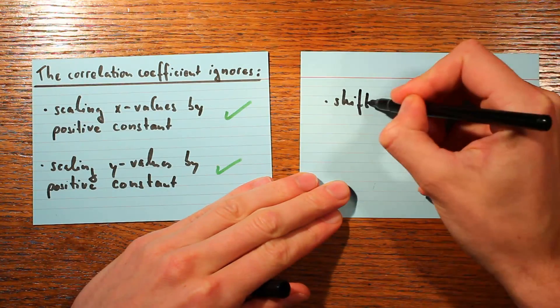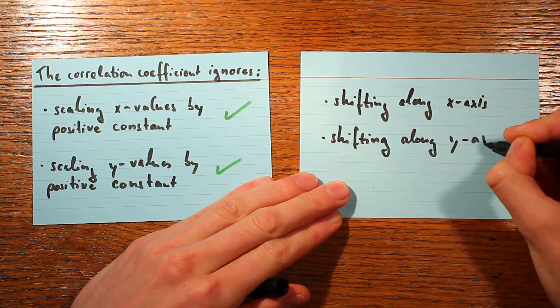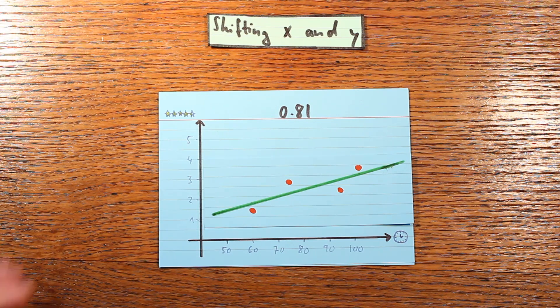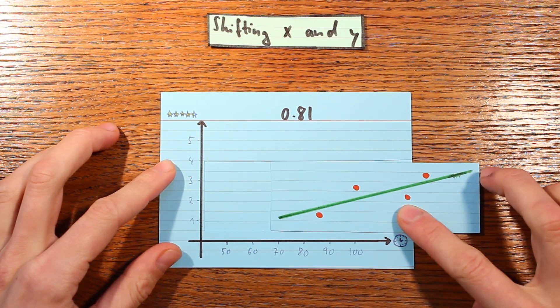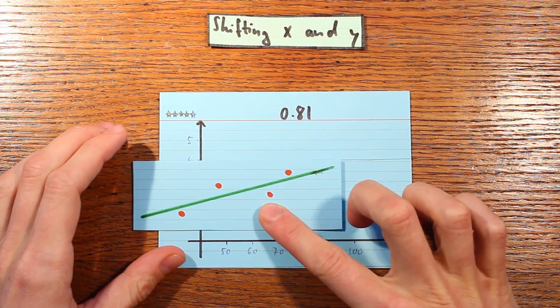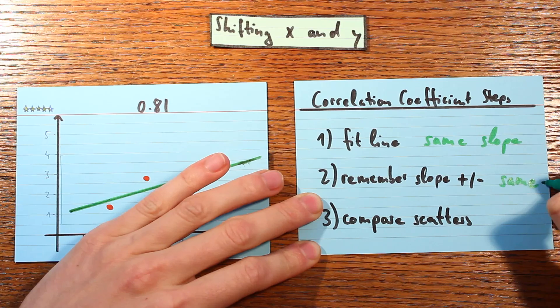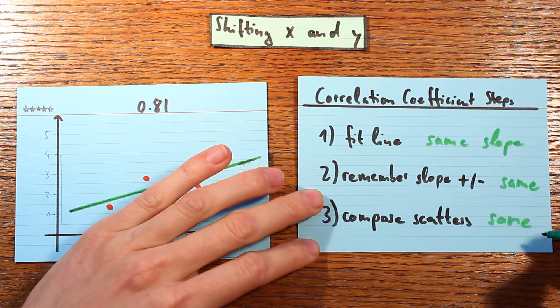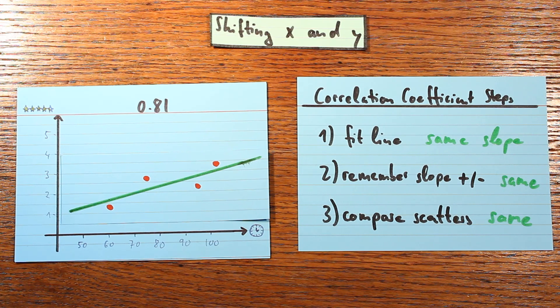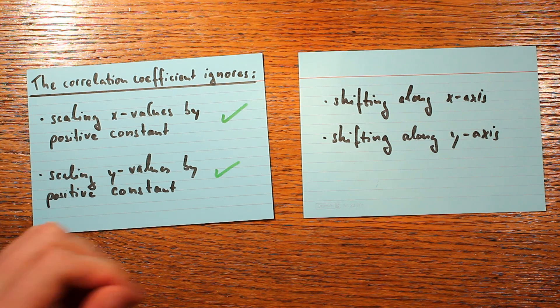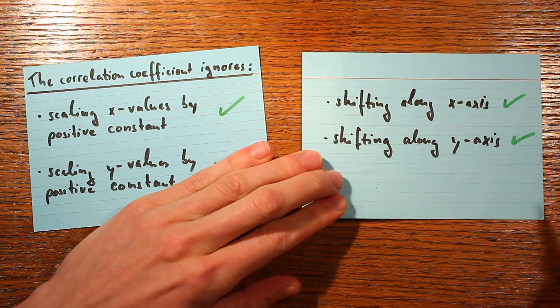The correlation coefficient doesn't only ignore scaling of the data — that is, multiplying x or y values by a positive constant. It also ignores shifting of the data, meaning adding a constant to the x or y values. If you add something positive to all x values, the data just shifts in one direction; add something negative and it shifts the other way, and the same applies to the y-axis. This kind of shifting doesn't change the direction of the slope, and it doesn't change the y-axis scatter or the scatter around the fitted line. So the correlation coefficient doesn't care — and this is useful because it makes the correlation coefficient independent of units.